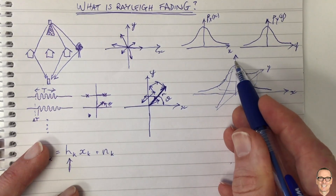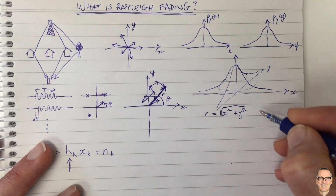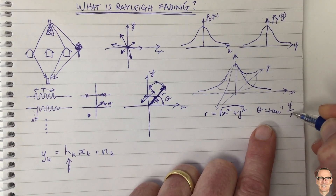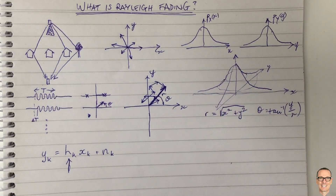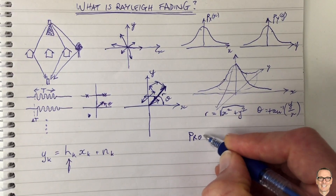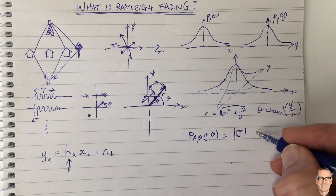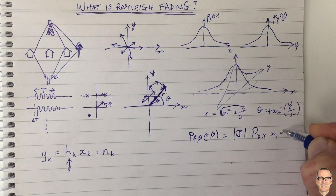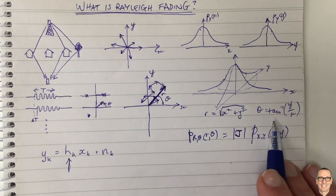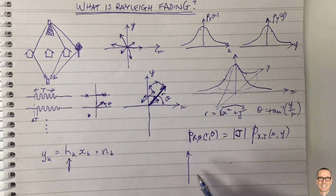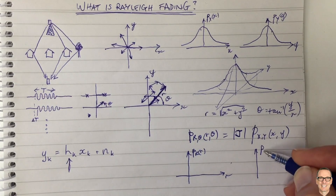If we consider the x and y components to be independent — they are in orthogonal in-phase and quadrature directions — then the overall combined PDF is the multiplication of the two Gaussians. We get a two-dimensional picture: probability density vertically, with x and y as the base plane. The result is a symmetric Gaussian hill with circular contour lines. To change variables to r and theta, we use r = sqrt(x² + y²) and theta = arctan(y/x), then apply a change of variables using the Jacobian matrix.